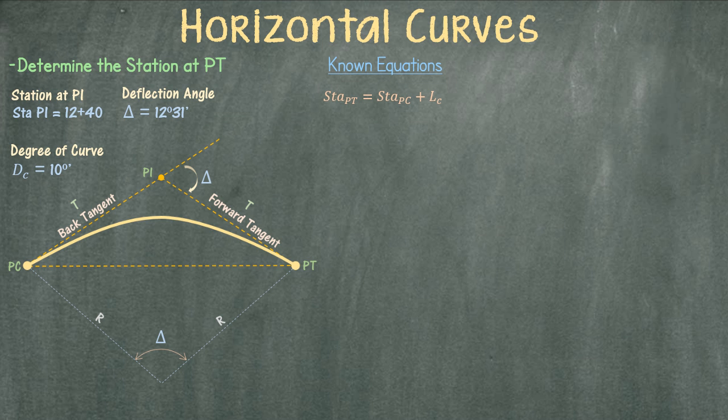We do not know either one of the variables, so we're going to use some other equations. We know that station PC equals station PI minus the tangent. We are given the station PI but we need to find the tangent.